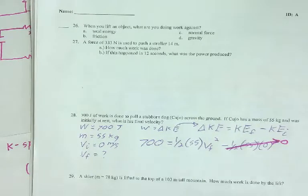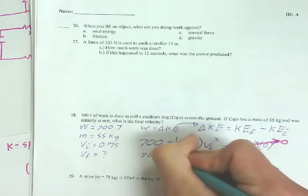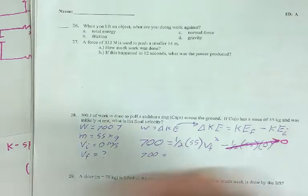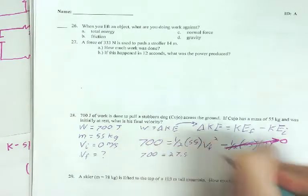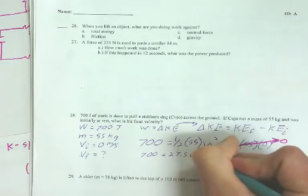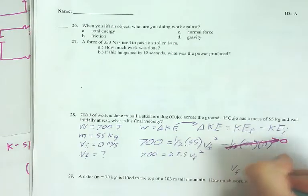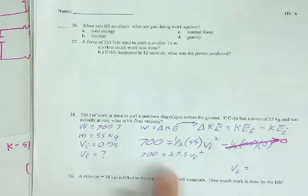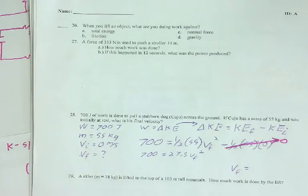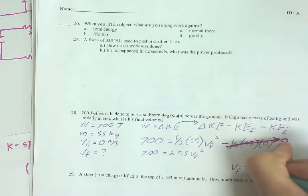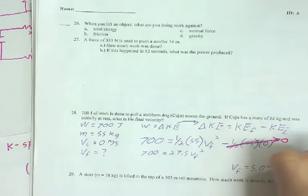So my equation is 700 equals 27.5 v squared. And then from here, you just have to solve out the rest of the math. Divide the 27.5 over. Square root to get the number by itself. Final velocity is 5.0 meters per second.